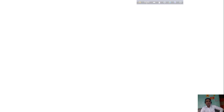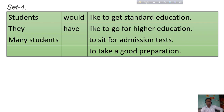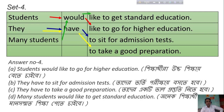Okay, let's see the other table. Set 4. Students would like to go for higher education. They have to sit for admission tests. They have to take good preparation. Many students would like to get standard education. Here is the answer script for you.